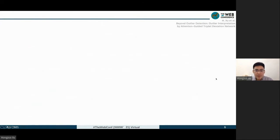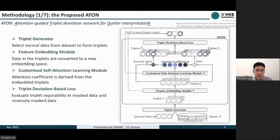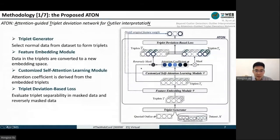Here is our method, ATON. This is the basic network structure which consists of four main components. I will introduce them one by one.